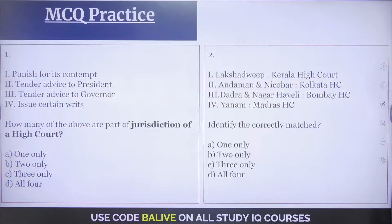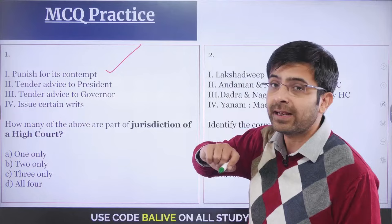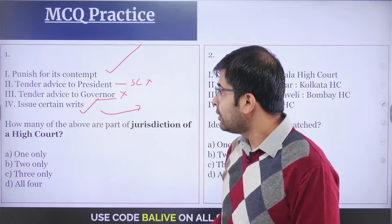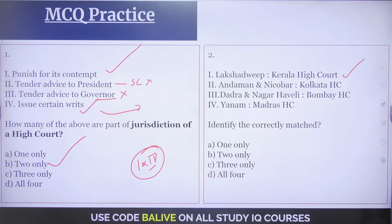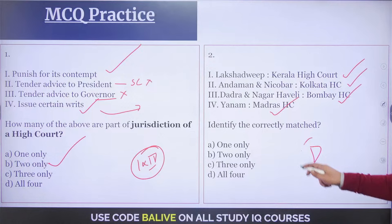Looking at the previous class questions: High Court jurisdiction — punished for contempt, yes; tender advice to the President, only the Supreme Court can do that, so no; tender advice to the Governor, no; issue certain writs, absolutely yes. So options one and four are correct, making the answer two only. Lakshadweep under Kerala High Court, Andaman and Nicobar under Calcutta High Court, Dadra Nagar Haveli under Bombay High Court, and Yanam under Madras High Court — all four correctly matched.